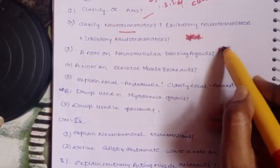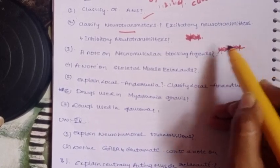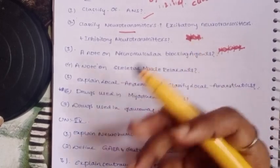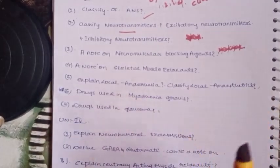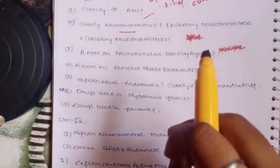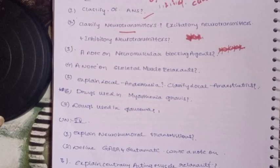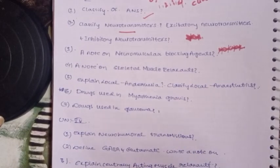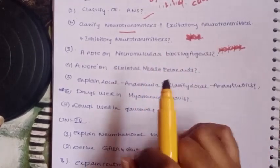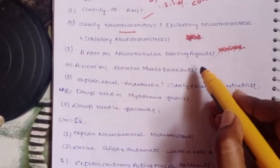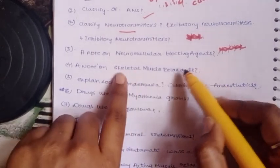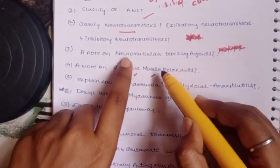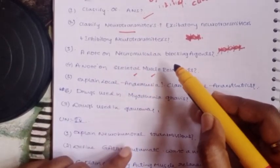A note on neuromuscular blocking agents - this question is very important. Both nerves and muscles can be blocked by these agents.